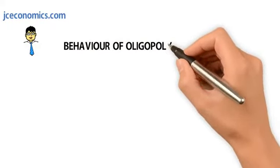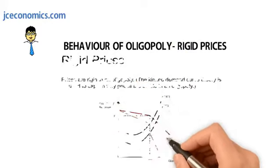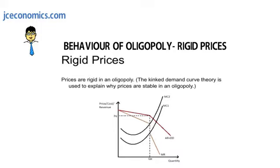Behavior of oligopoly: rigid prices. In an oligopoly, prices are rigid, and the kinked demand curve theory is used to explain why prices are stable in an oligopoly.